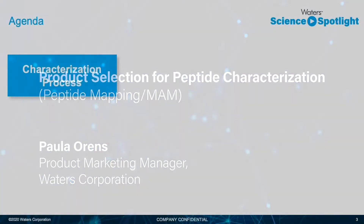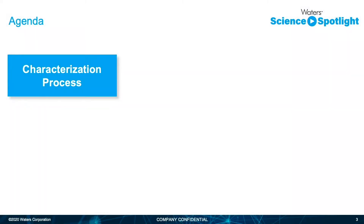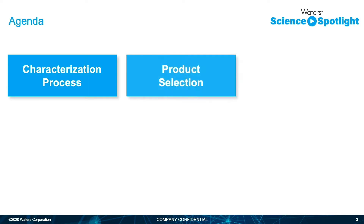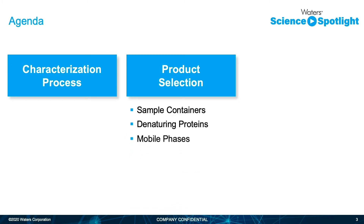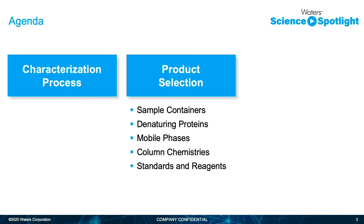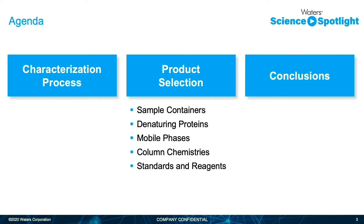I'm going to provide a brief overview of the characterization process so it will be easy to determine what products will be useful and where. Then we'll position a few products throughout the process like sample containers, denaturation products, different mobile phases, and of course we'll talk about column chemistries. Then finally some standards and reagents that can be useful to qualify or monitor your processes.